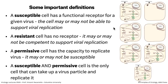Before we go any further, I need to define some terms because the terms I use are often different from the rest of the world, and since you're in a virology course, you need to know them. A susceptible cell means that the cell has a receptor for a virus. The cell may not be able to actually reproduce the virus — susceptibility only implies attachment. This is at the single cell level. So susceptible means the cell has a functional receptor.